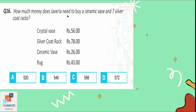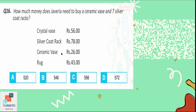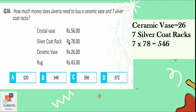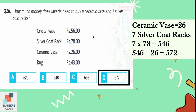Question number 16: how much money does Tiveria need to buy a ceramic vase priced at 546? Adding the cost of both objects, the total is 572. Option D is the correct one.